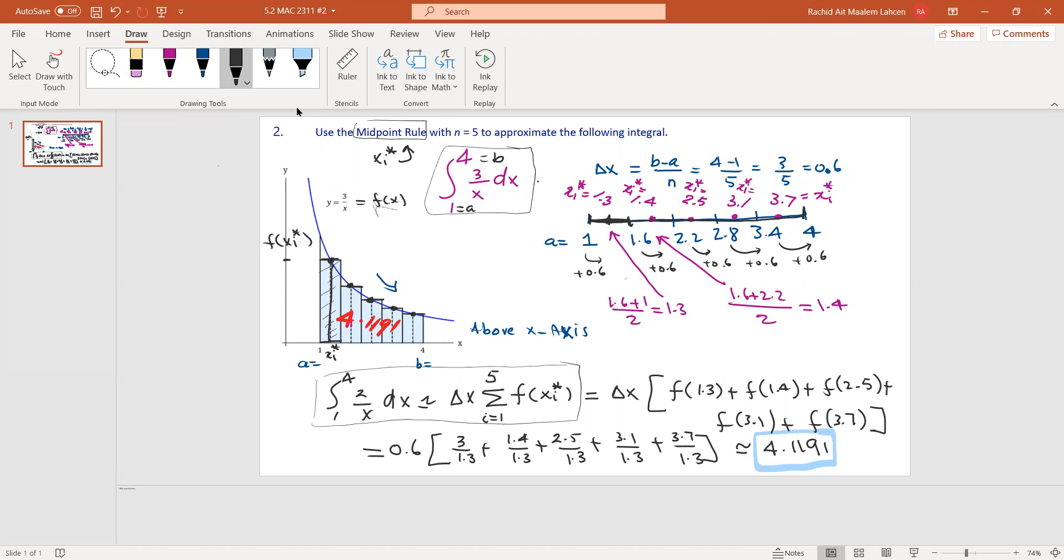To do that, we use the midpoint. The midpoint is the average of 1 and 1.6, giving us 1.3. Similarly, for the next one, 1.6 and 2.2 give us 1.9. Then 2.2 plus 2.8 divided by 2 gives you 2.5, and so forth.